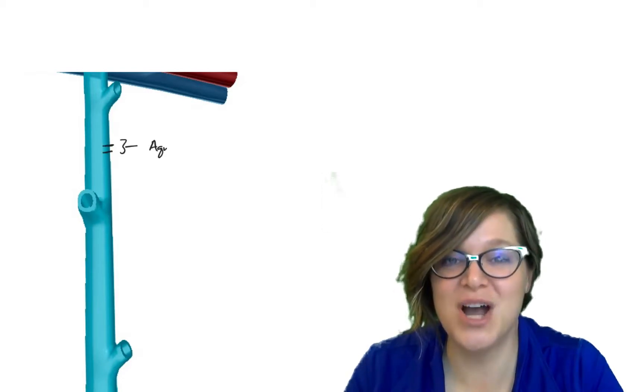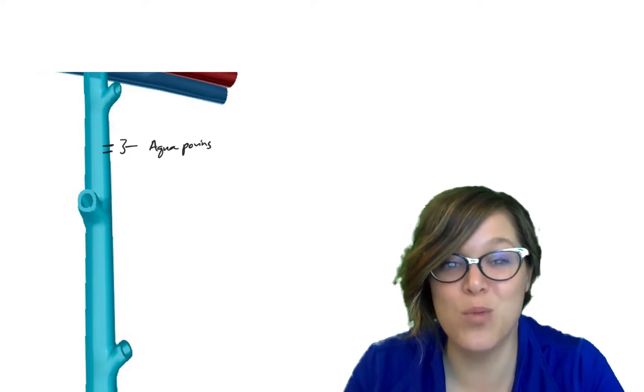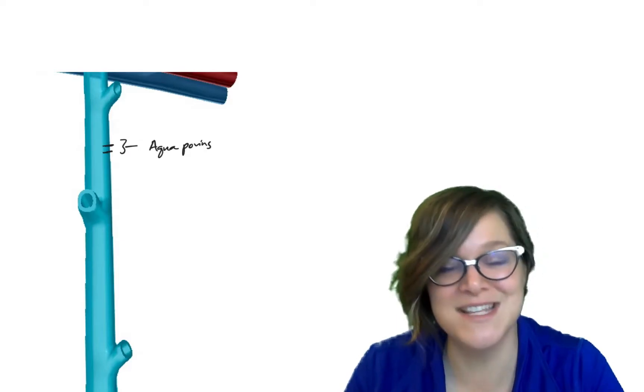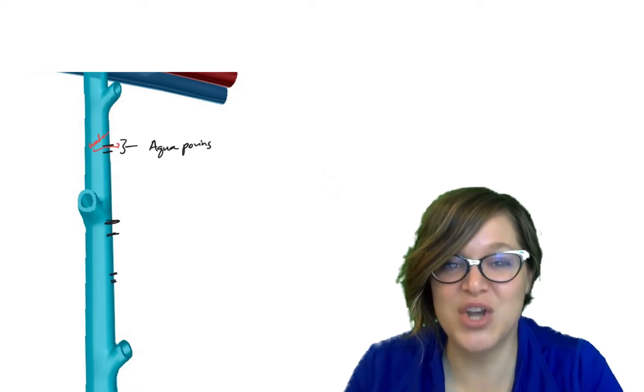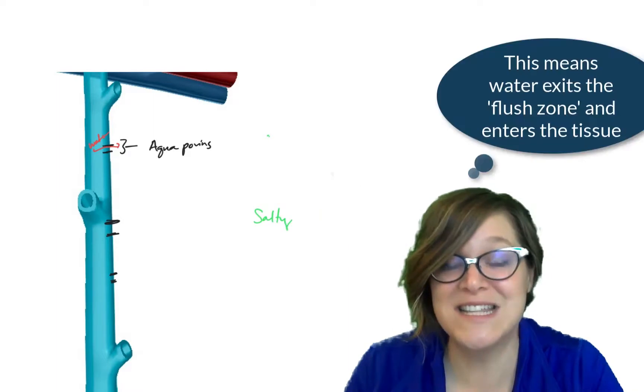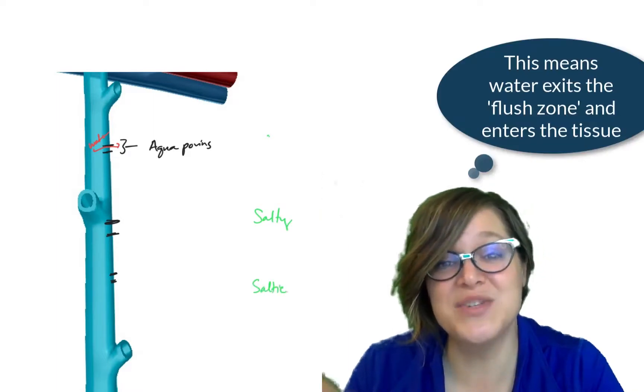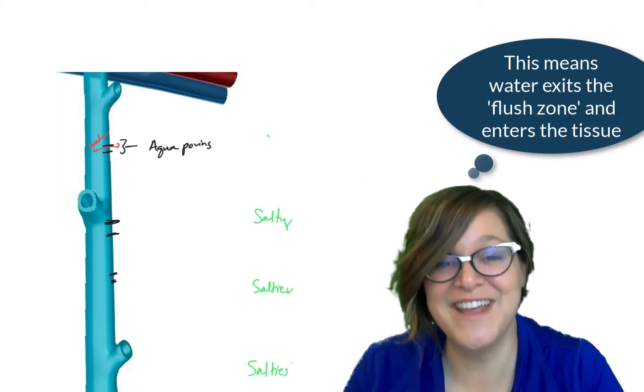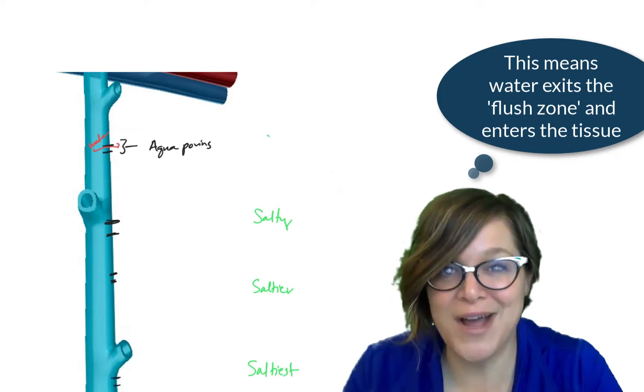Let's take a closer look at the collecting duct and see what it does. As we go down the collecting duct, the collecting duct has channels in it. These are called aquaporins. That sounds like water pour, and that's because that's what it means. These channels will allow water to exit that collecting duct and go into the area around it. Guess what? Collecting duct is going into the medulla as well, so it's going into a saltier, saltier area. That's going to make the water want to go out.